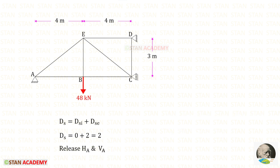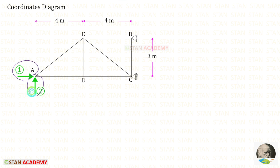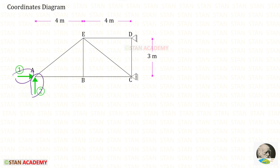This truss has only external degree of static indeterminacy. Out of these five reactions, we need to remove any two reactions. From point A I am going to remove the horizontal reaction Ha and the vertical reaction Va. So we remove the hinged support from A. This structure is now called the released structure. In this analysis there are two coordinates: Ha and Va, because we have removed both of them. We assume Ha is acting towards the right side and Va is acting upwards.